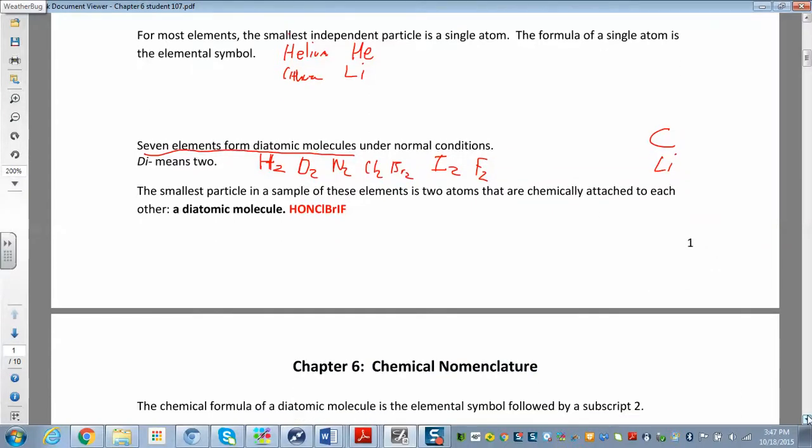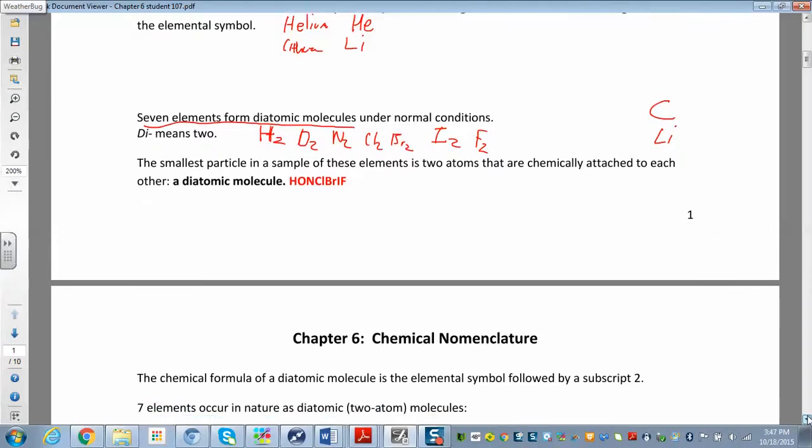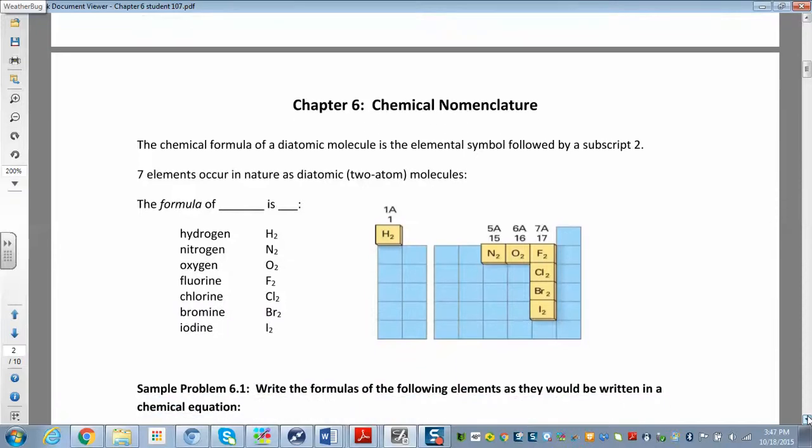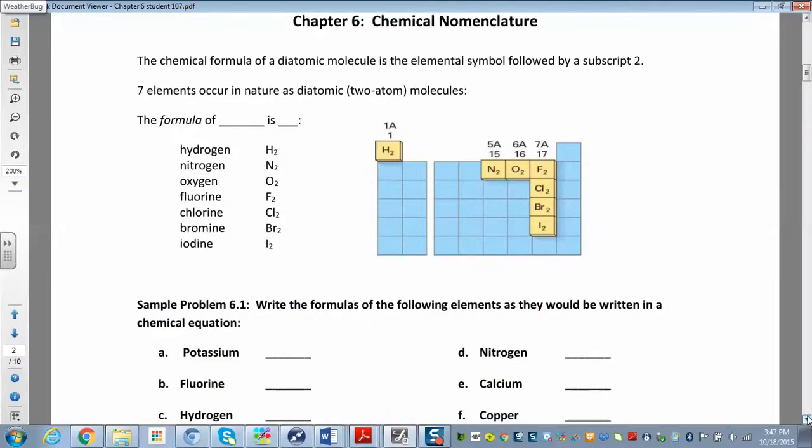Another way to remember that is horses need oats for clear brown eyes. Horses need oats for clear brown eyes. That's the first letter of each of the elements that are diatomic. A little liberty with the eyes there. So here we go again: horses need oats for clear brown eyes.